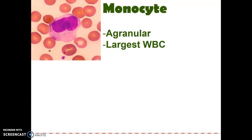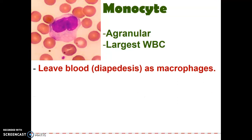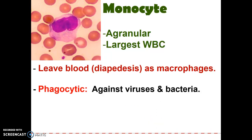Monocytes are the largest white blood cell. They leave the blood in a process called diapedesis — ped means foot, so they literally walk out, squeezing out of blood vessels, and become macrophages. They engulf bacteria in the pore, and when so many of them do it and die, they make a big white pus lesion — what you call a zit. They're phagocytic against viruses and bacteria and make up 3 to 9 percent of your leukocytes.